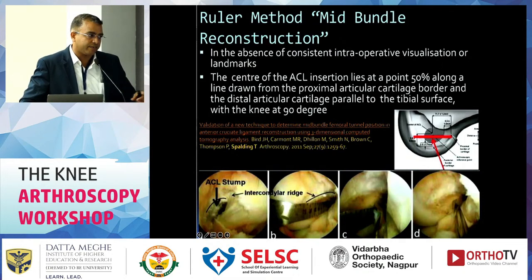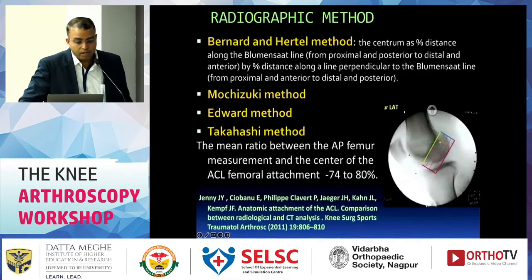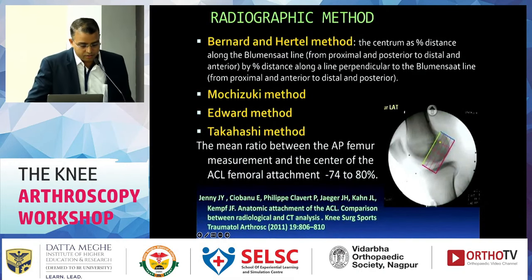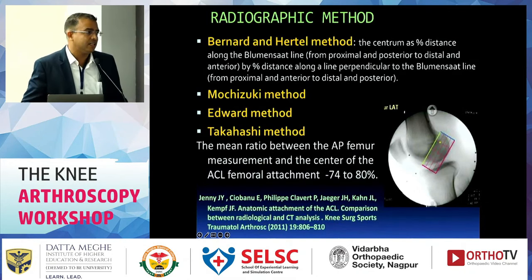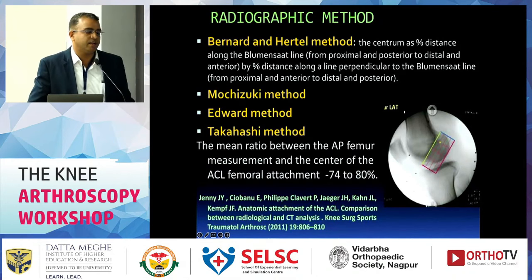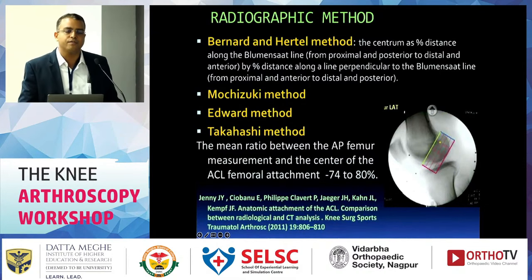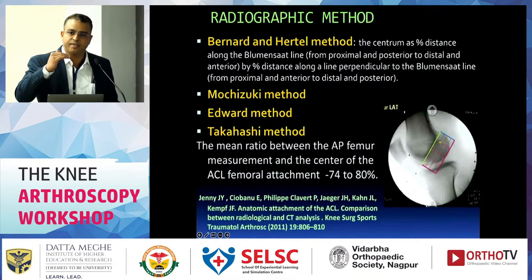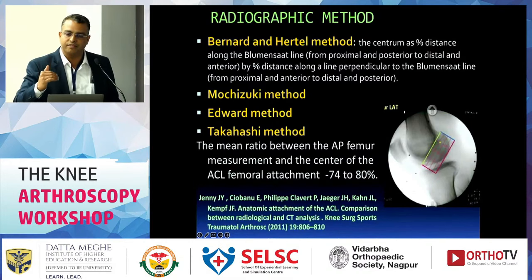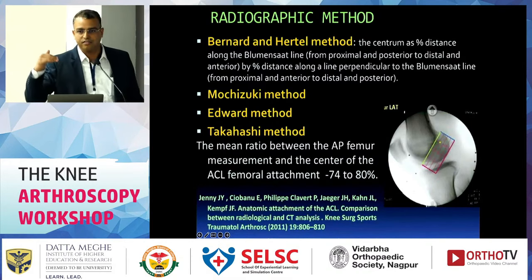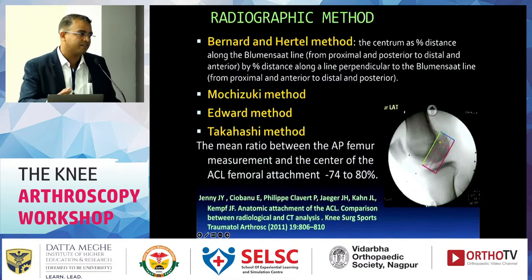Radiographic methods described by Bernard and Hertel and others are available, but it is worth noting that Iru Shishima published a paper in 2017 showing that the Blumensaat line is not always straight in every knee — sometimes it is straight, sometimes there is a small bump, and sometimes there is a larger hill area. These methods are therefore difficult to rely on alone.